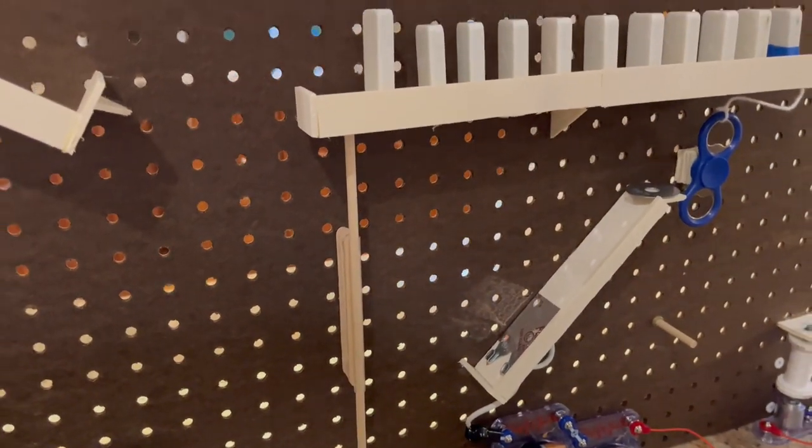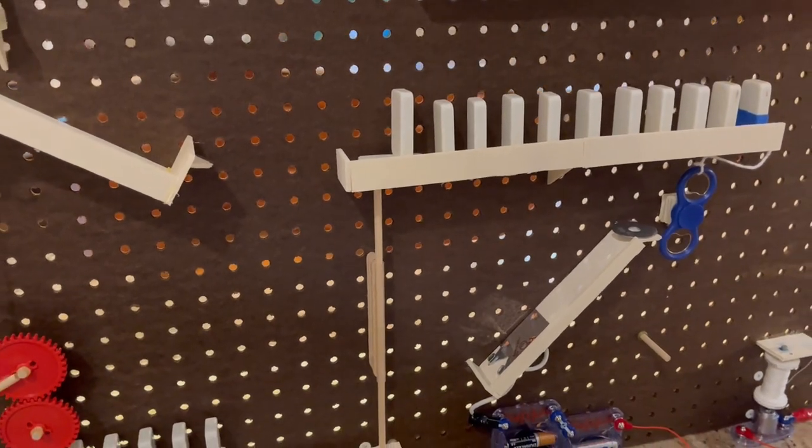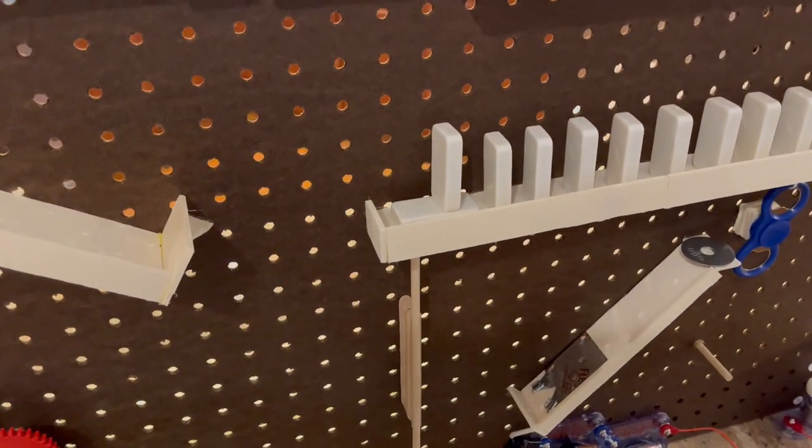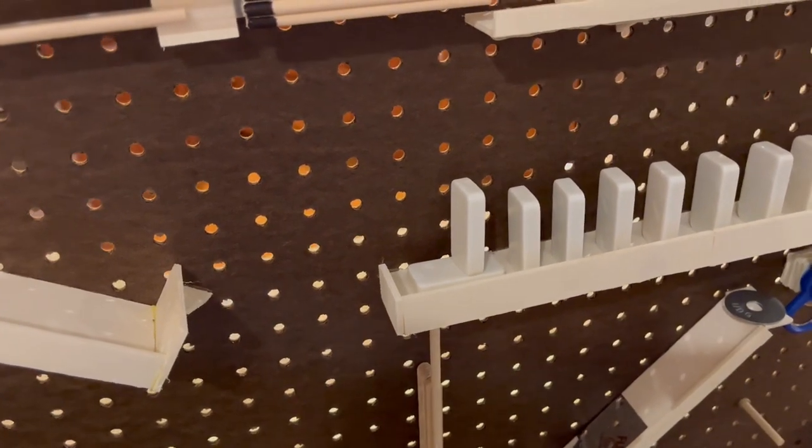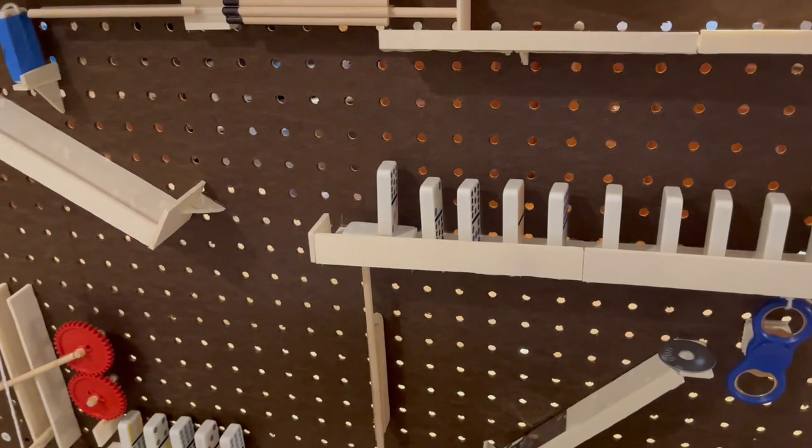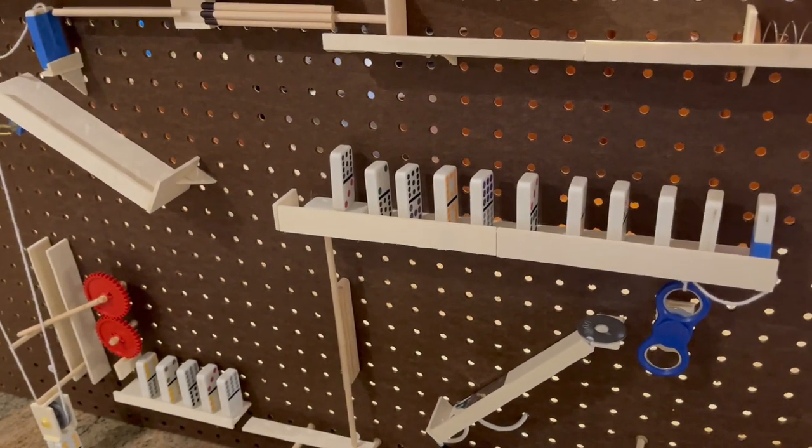Once the seesaw system is activated in the preceding feature, it propels a wooden rod into a trap door, allowing the system to climb back up more towards the top of the pegboard. Once the trap door is activated by the previous feature, a domino is knocked over by the door, starting a brief domino line.